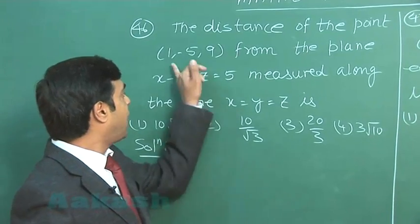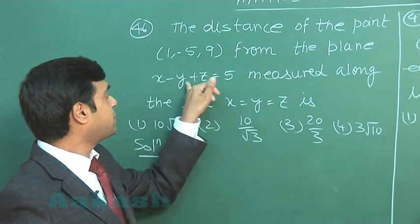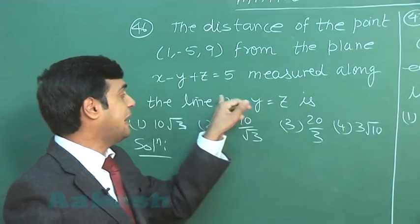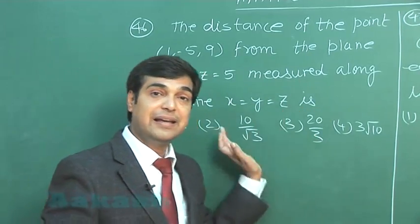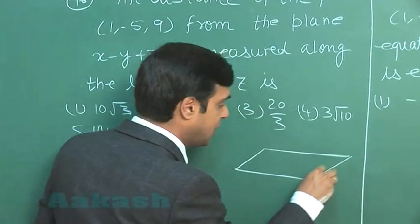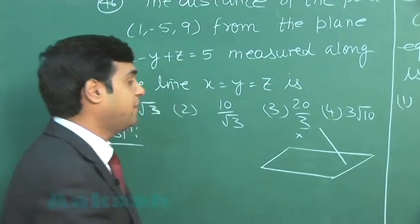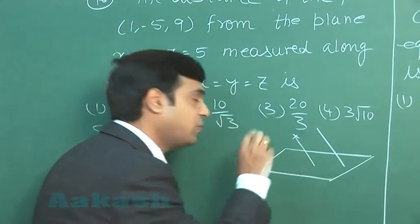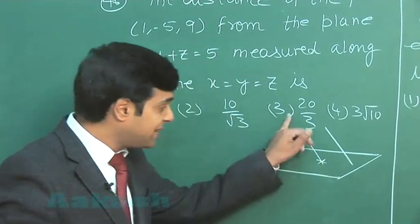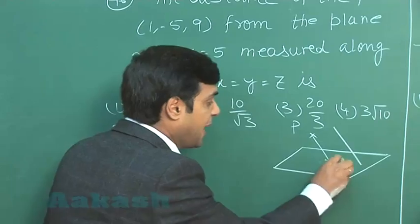The distance of the point (1, -5, 9) from the plane x - y + z = 5 measured along the line x = y = z. In fact, they are talking about the distance measured parallel to the given line. Let us say here is a point and we are going to measure the distance parallel to the given line. First we need the point of intersection of this line and the plane. We can write, say this is PM.